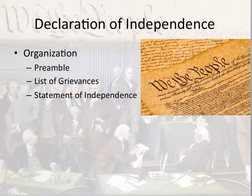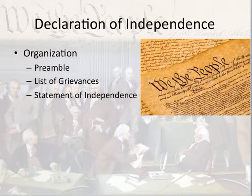The Declaration of Independence is organized like this: it's got a preamble, and then for the most part a list of grievances, which mostly start with something the king did wrong. Then it wraps up with a Statement of Independence. Much like the Constitution has a preamble, but that's about all they share — other than the fact that both were written by rich white men. So we can't get them confused.